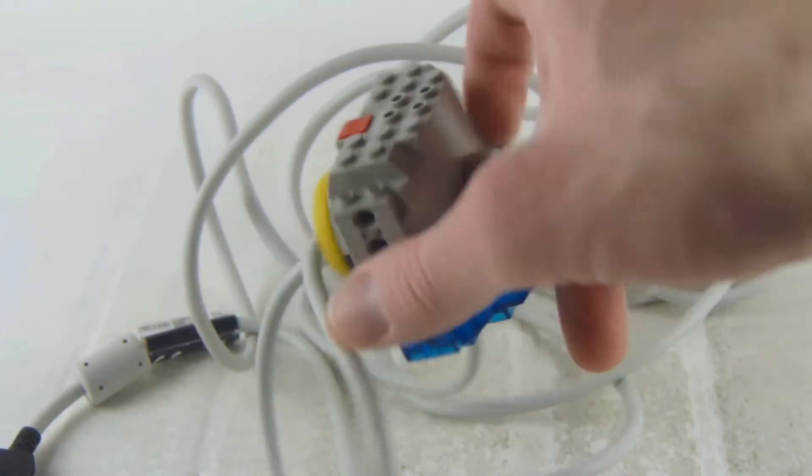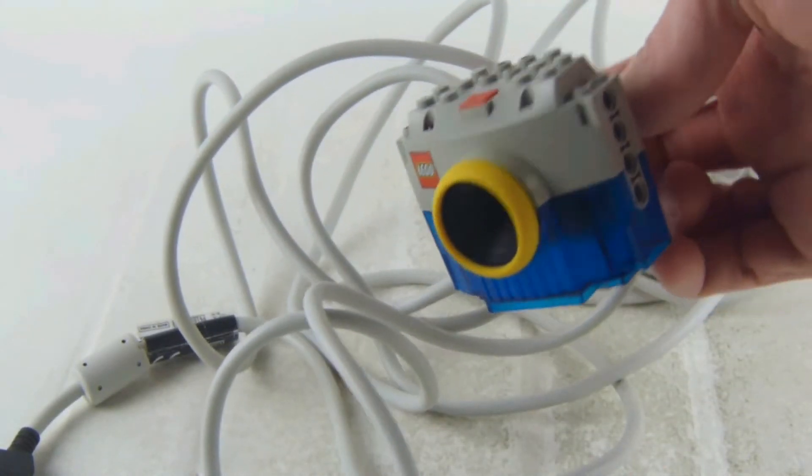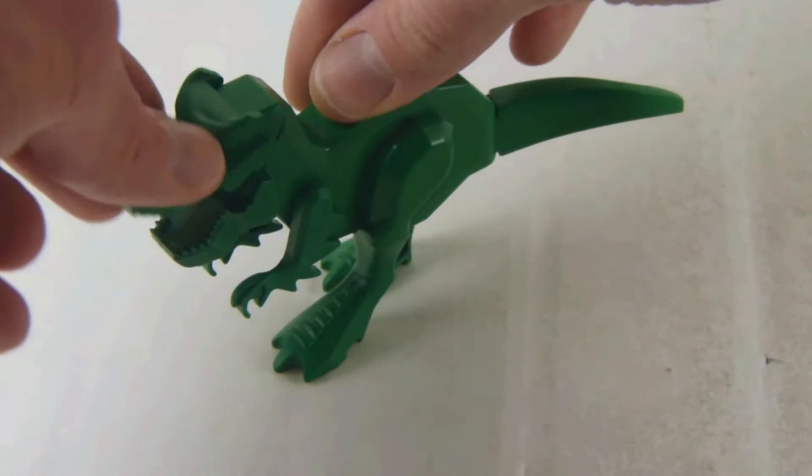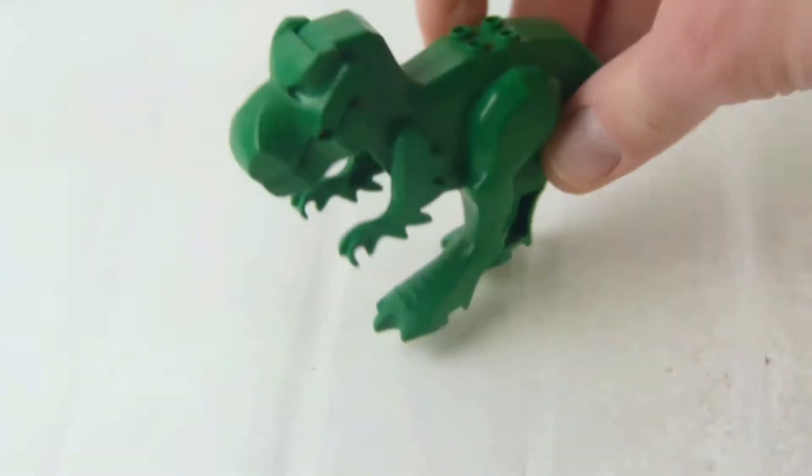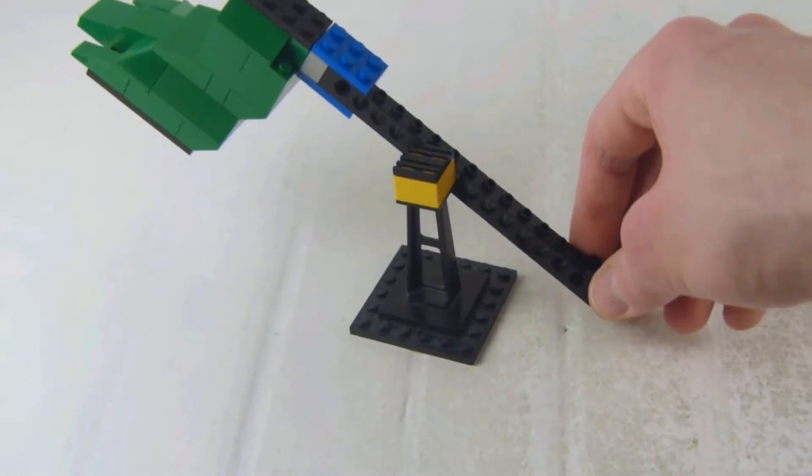Yeah, that's the camera we had back in the day. Technology has come a long way since then. And here we have a T-Rex - it's got mobile arms and a mobile tail, and the jaw opens and closes.